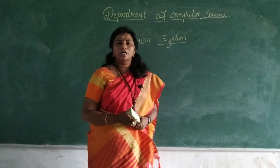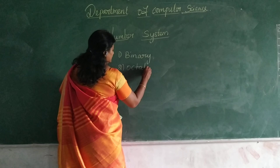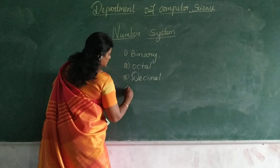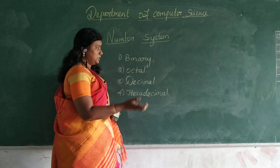The four types are: binary, octal, decimal, and hexadecimal. Before we move on to each and every number system, we have to understand 3 basic concepts.